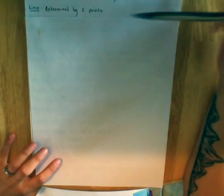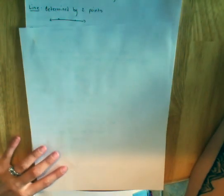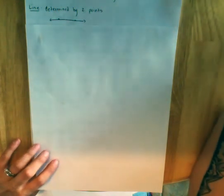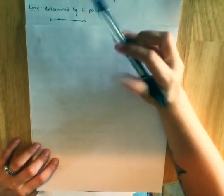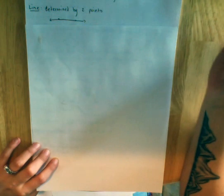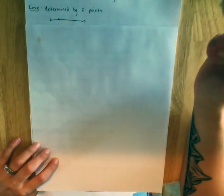So the first definition we have is a line. A line is determined by two points and it looks like this. Notice I have arrows on either end. That is because a line continues forever in either direction.